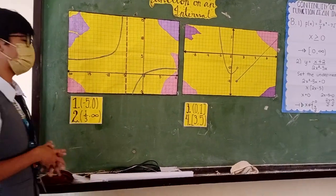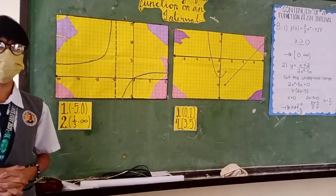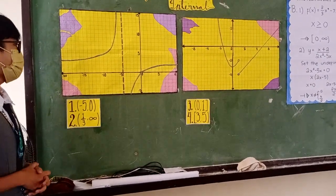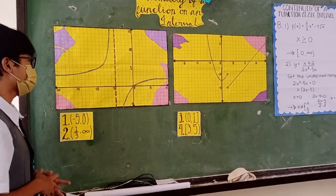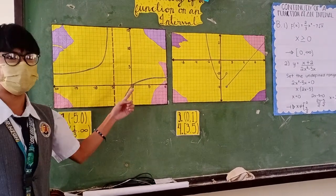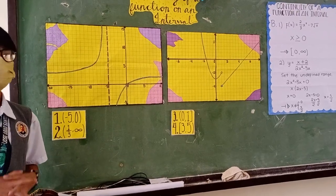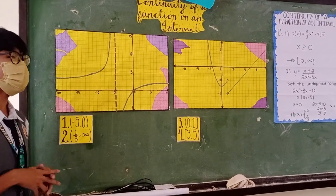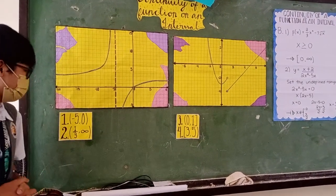But first, how will we know if the graph is either continuous or discontinuous? A graph is continuous if the line is not broken and we don't have to lift our finger while tracing the line. The graph is discontinuous if the line is broken and our fingers have to jump to complete the line.